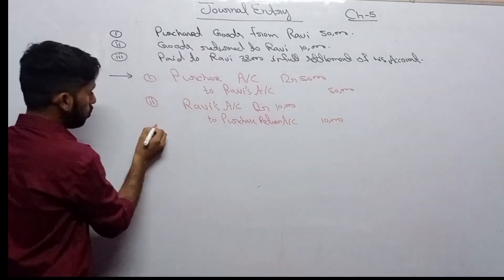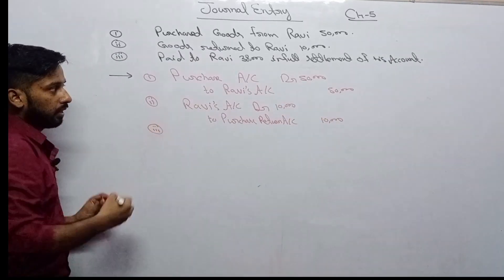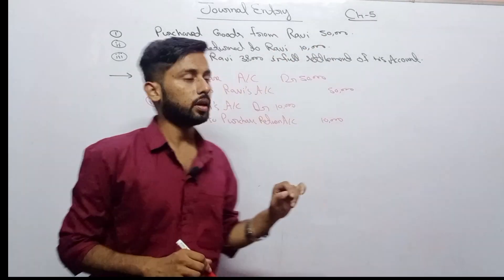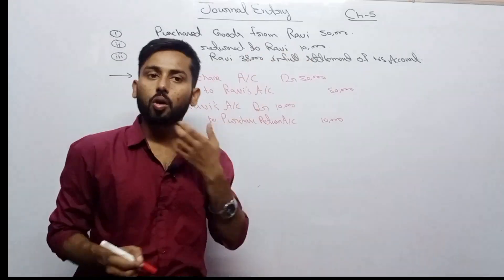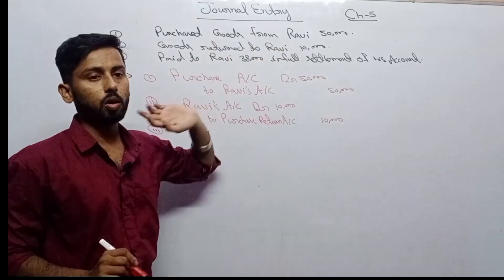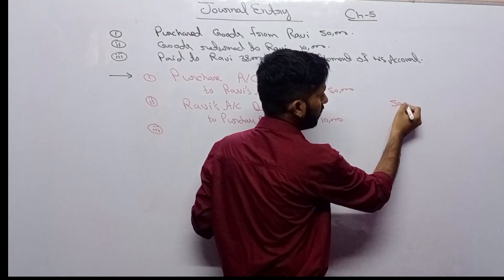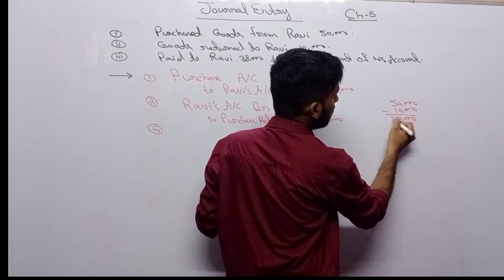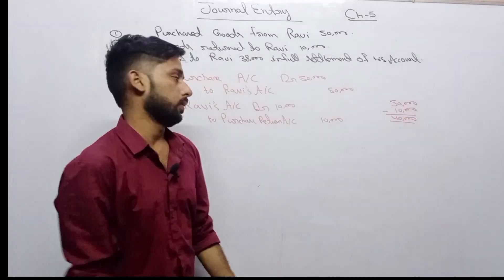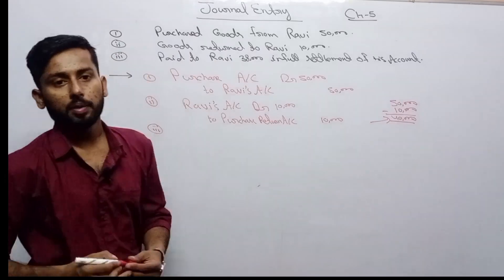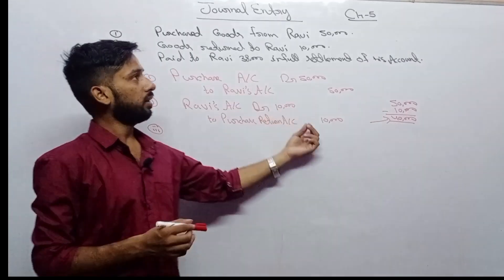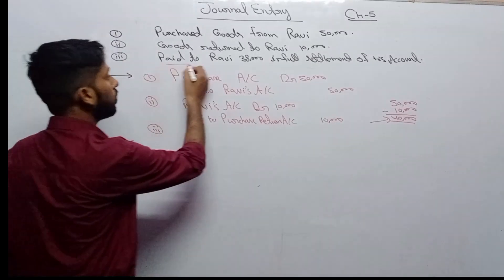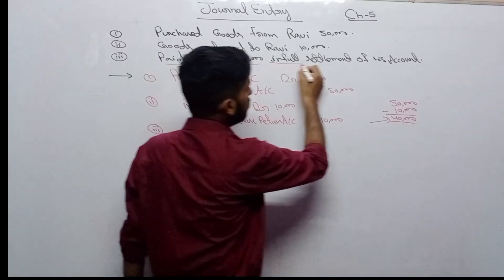Now understand carefully — all three questions are one combined question, not separate. Goods purchased from Ravi: 50,000. Goods returned to Ravi: 10,000. So now, how much do we owe Ravi? 50,000 minus 10,000 equals 40,000. Now the question says: cash paid to Ravi 38,000, that means 40,000 to be paid but only 38,000 given.